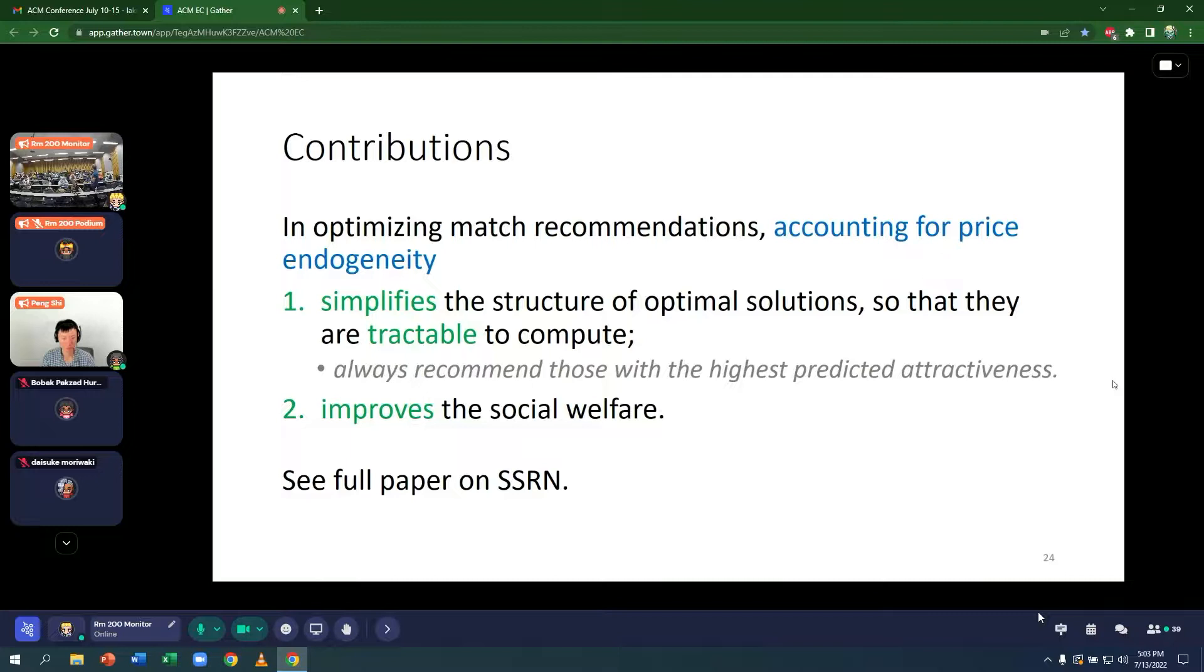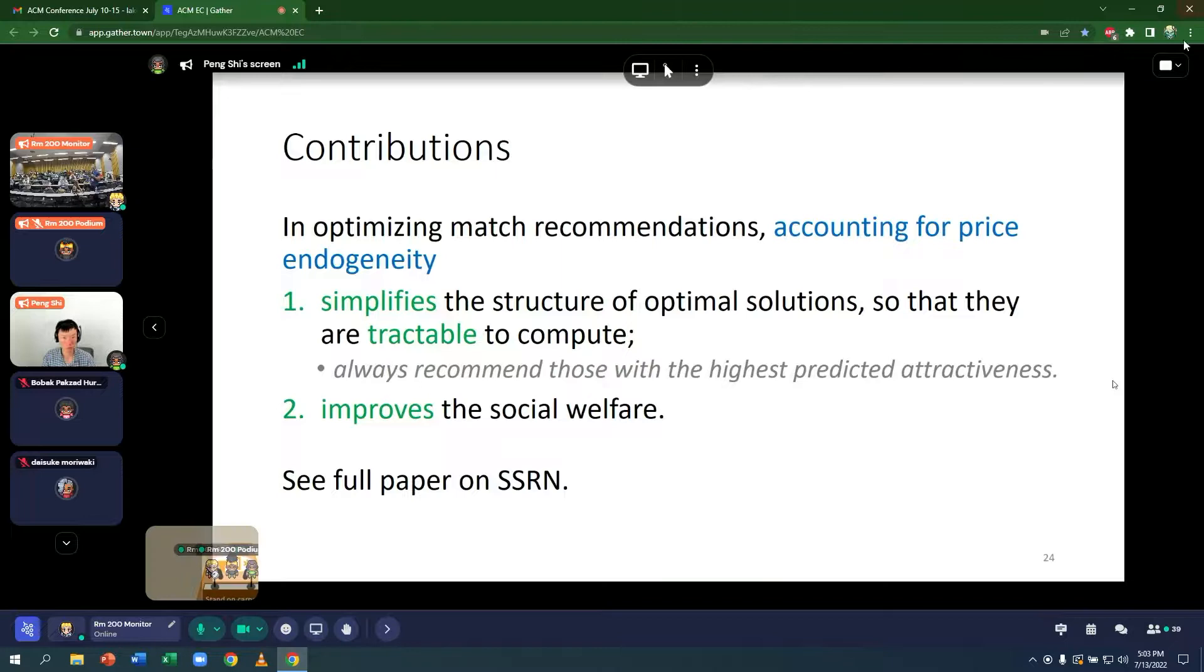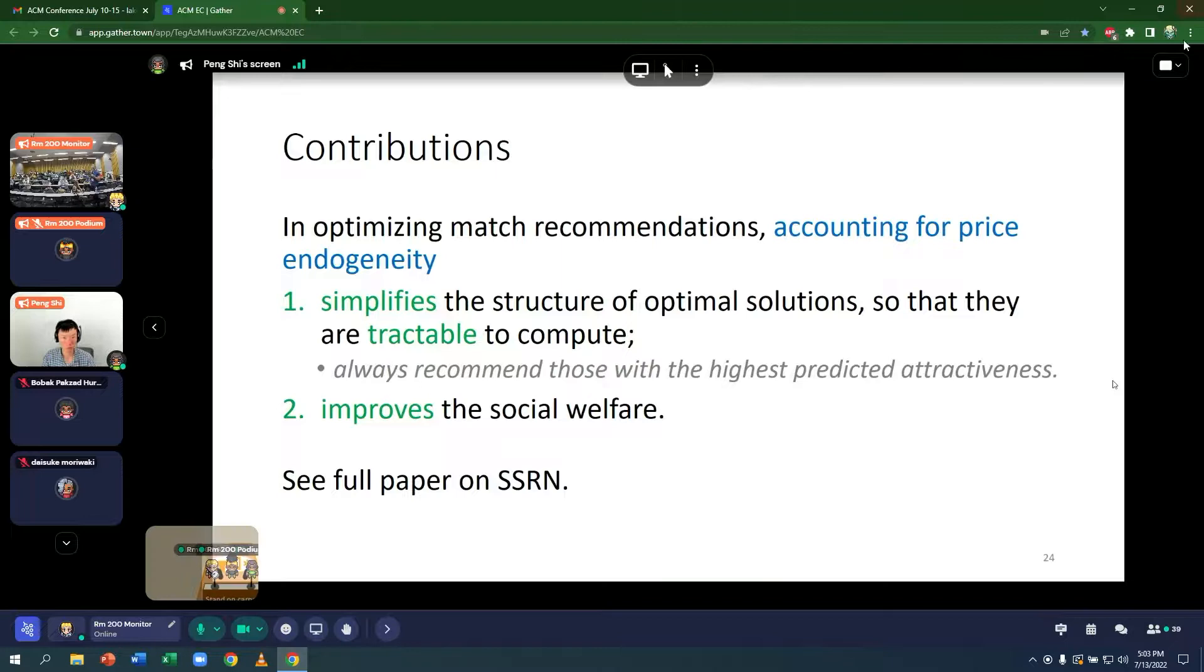So we have time for a question or two. Does anyone have any questions? Okay. Well, I have a question, unless there's any in the chat. So you said that it can be computed efficiently with stochastic subgradient descent. What is the convergence rate of that?